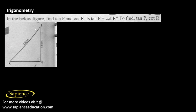In this triangle, we have two sides PR and PQ. The side RQ is not given. We can find it using the Pythagoras theorem.